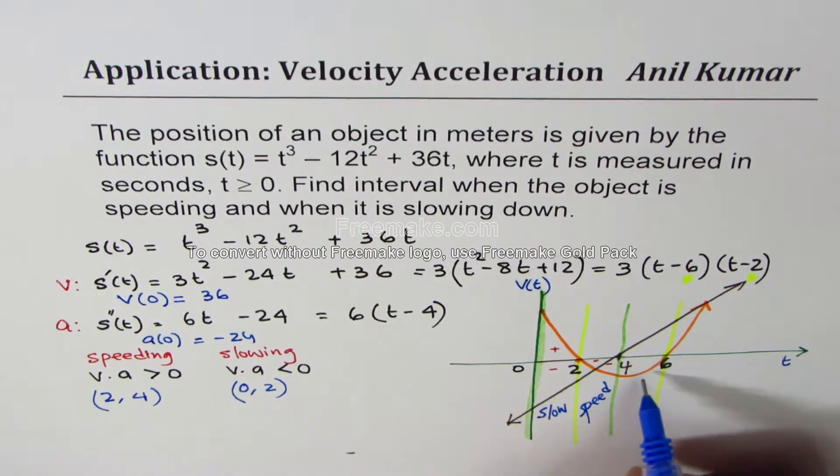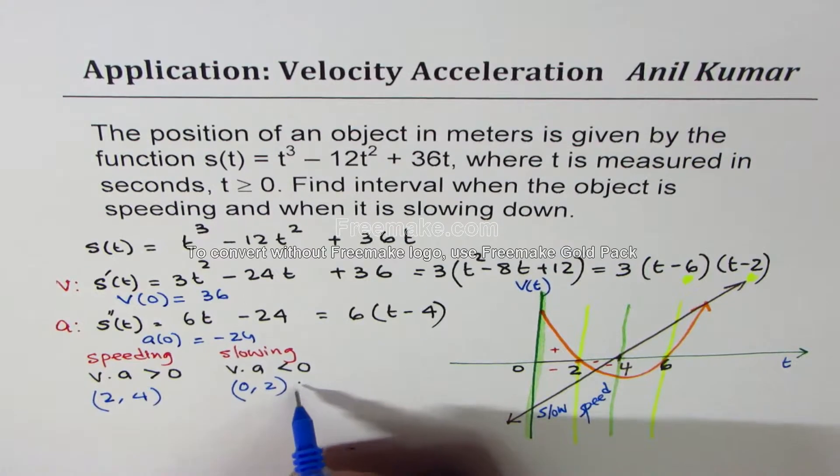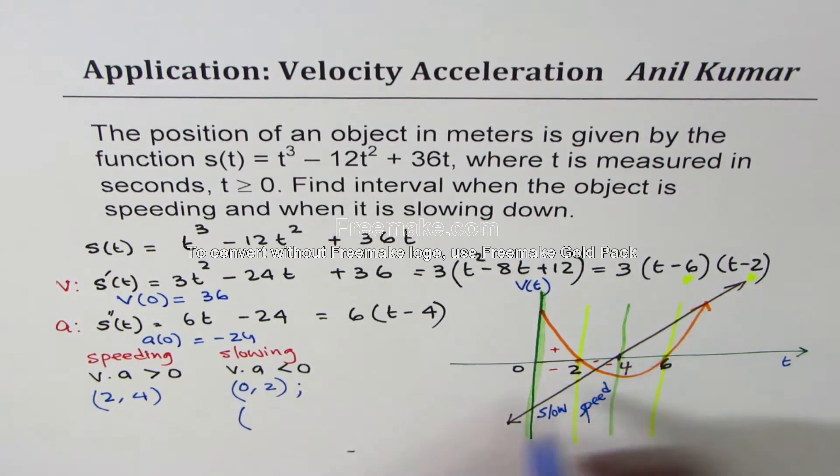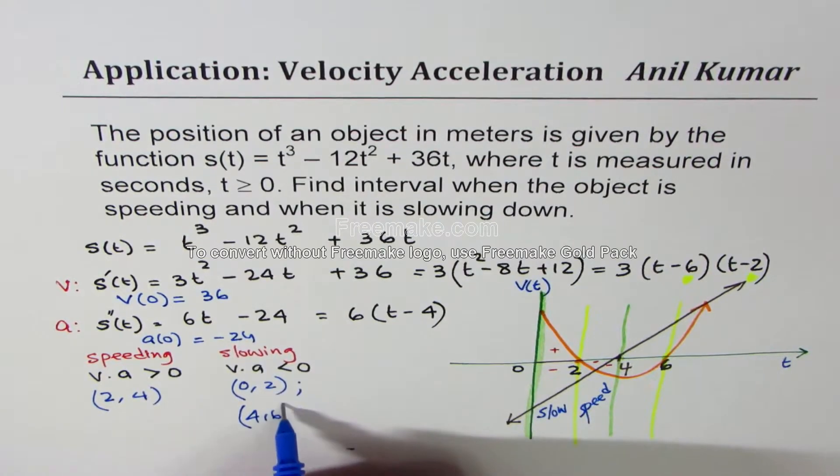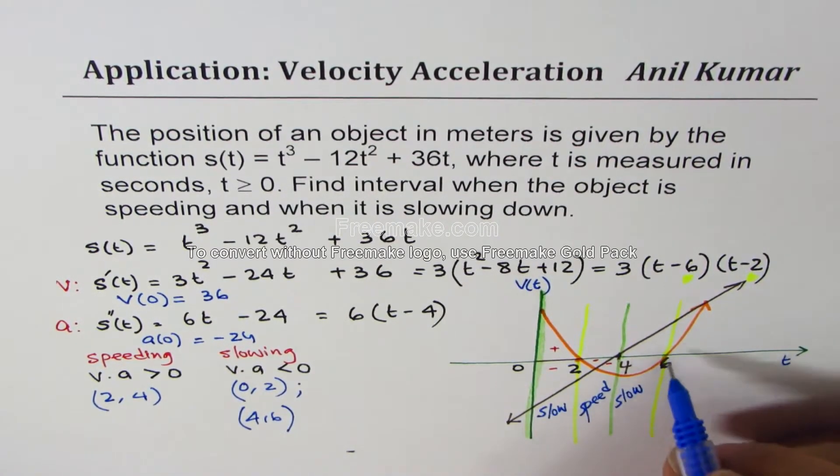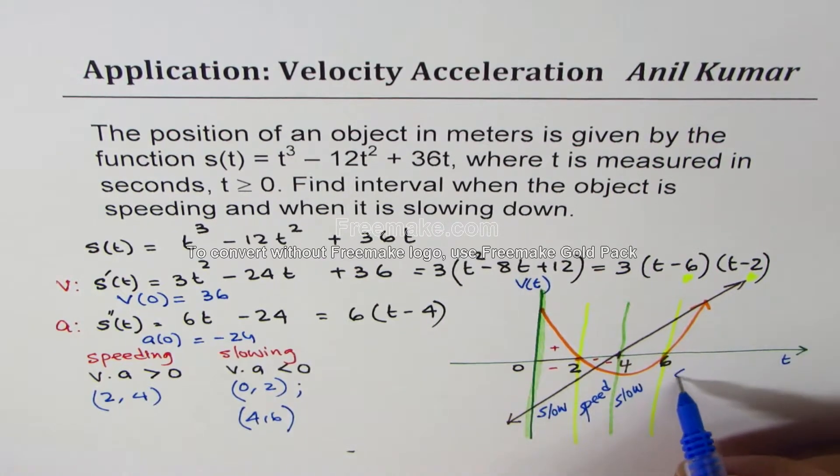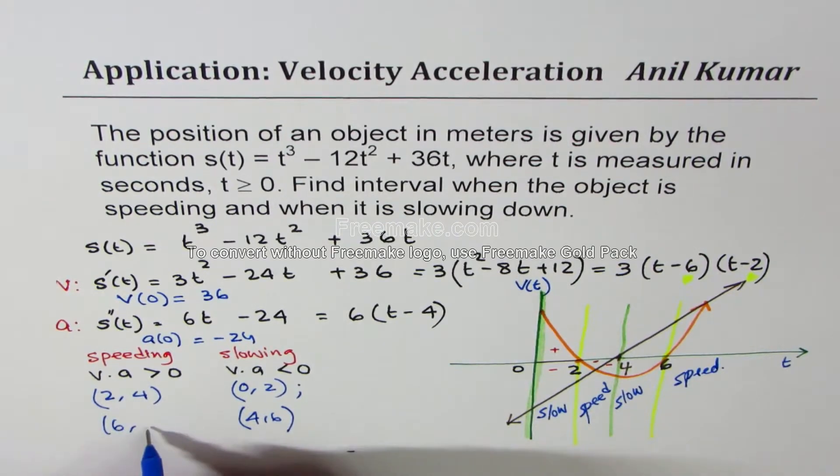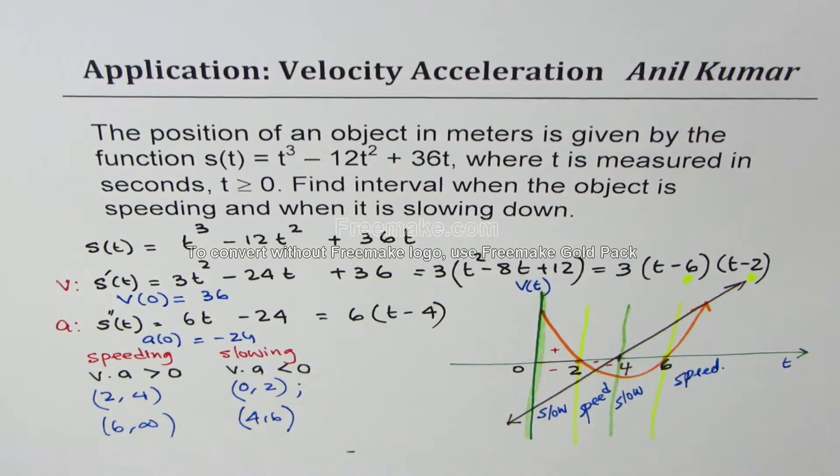4 to 6. Acceleration is positive. However, negative velocity. And therefore, at this interval, 4 to 6, it is slowing down. So it is slow again. And then both are positive. So it is speeding. So beyond 6, we'll write just infinity for time being. It is speeding.